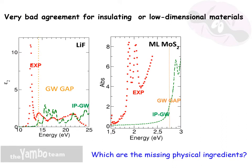The situation is even worse for insulating or low-dimensional materials where, as you can see here, the independent particle spectra calculated for instance for lithium fluoride, a bulk band gap material, or monolayer MoS2, a prototype 2D material, calculated at the GW level of approximation, are completely off with respect to the experimental data. So it is clear that there are missing physical ingredients, and we want to discuss now which these ingredients are and when they are important.